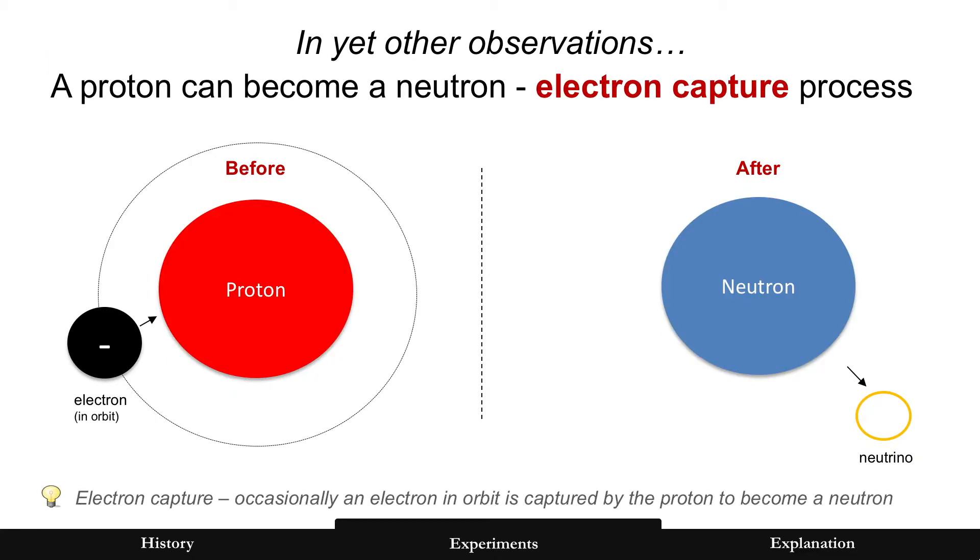And even more observations. A proton can become a neutron through what's called an electron capture process. So when an electron is in orbit around the nucleus, it can be absorbed by the proton and become a neutron, occasionally.